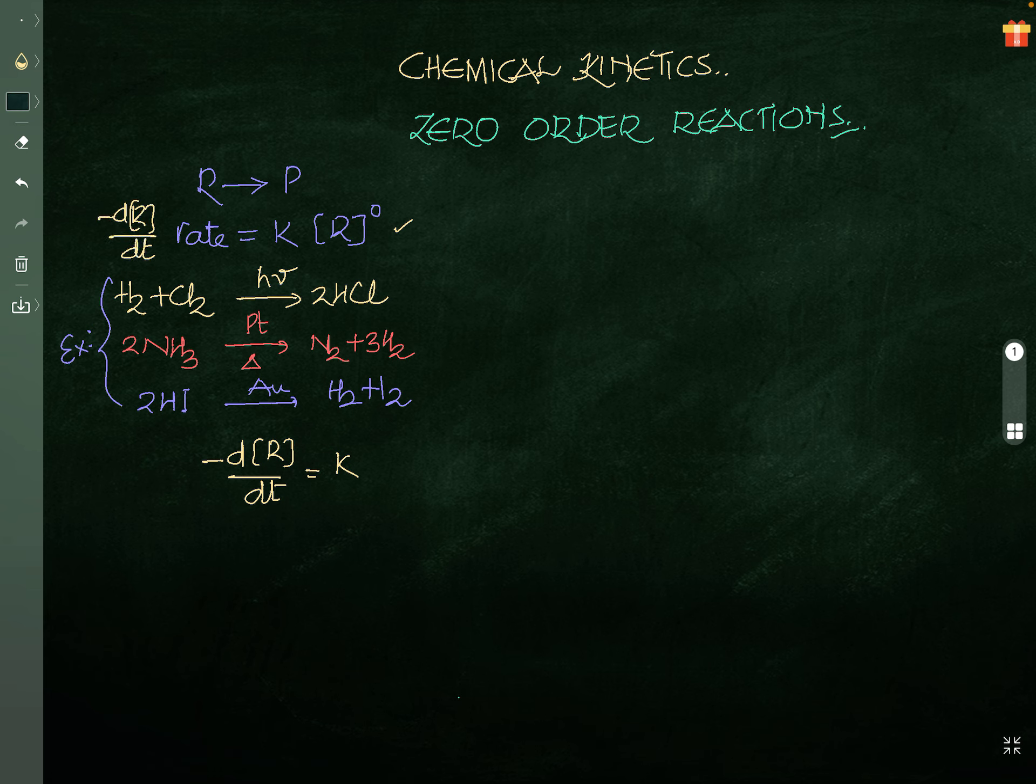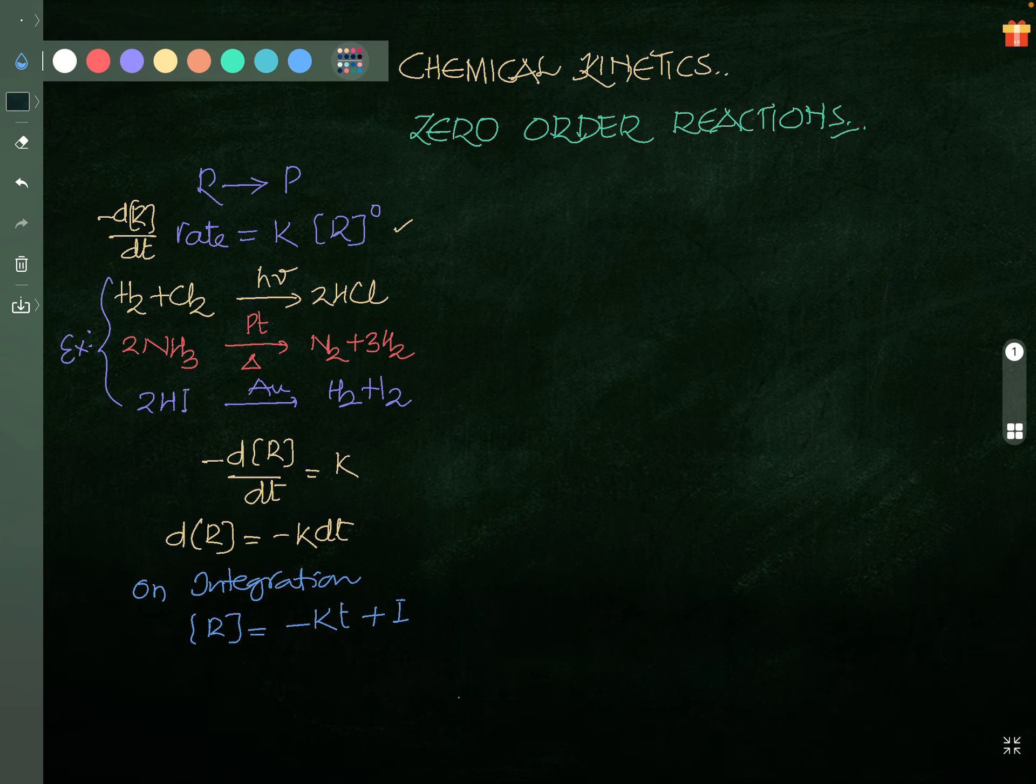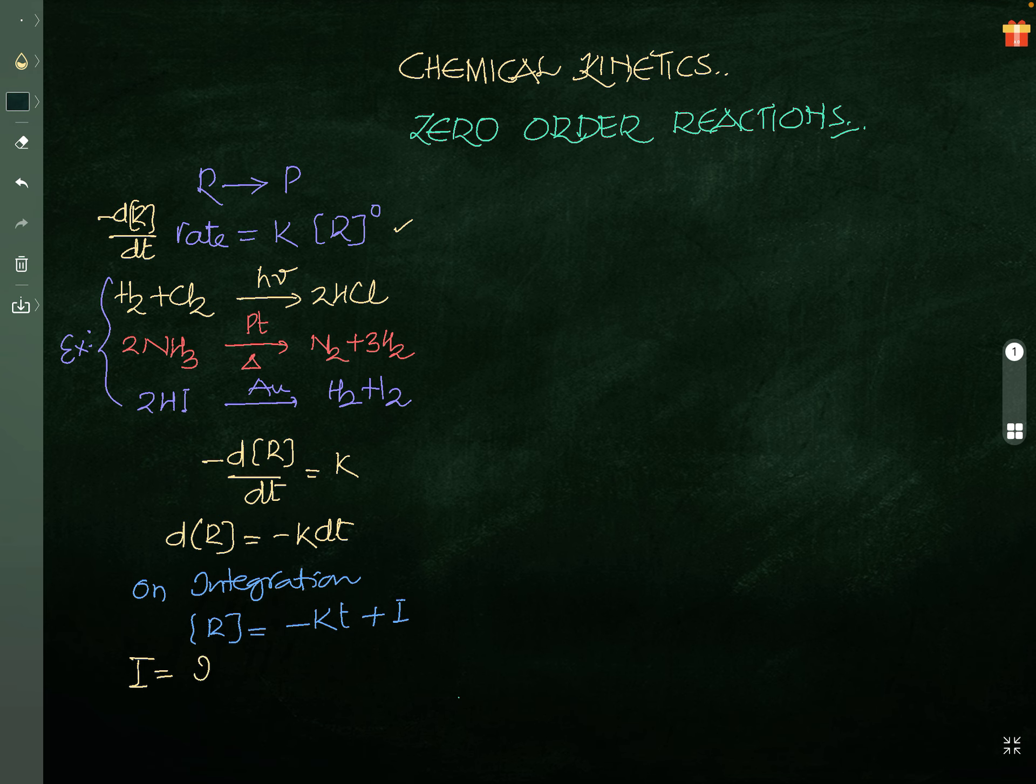Change in concentration. Reactant, so decreasing. That is why we are keeping minus there. Minus dR by dT equals K. Or we can write this expression as dR equals minus K dT. On integration, when you go for integration of this expression, it will become R equals minus KT plus I, where I is called integration constant. I is integration constant. You will be learning about this in your mathematics. What is required for chemistry is that much I know.